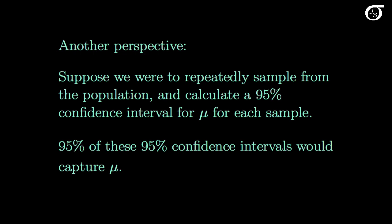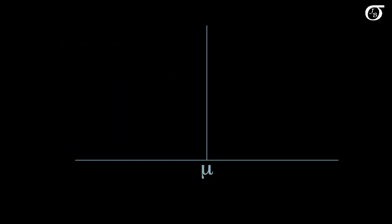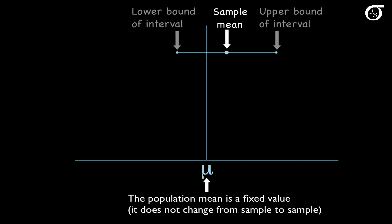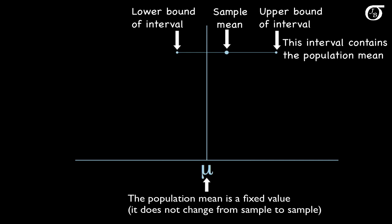Let's see what that looks like in a plot. Here I've drawn in a vertical line at the value of mu. Mu is a fixed value that is usually unknown to us, and so we are trying to estimate it with our confidence interval. If we draw a random sample from the population and calculate a 95% confidence interval for mu, the large dot in the middle represents the value of the sample mean, and the dots on the ends are the endpoints of the interval. This particular interval captured the value of mu — mu is contained within this 95% confidence interval.